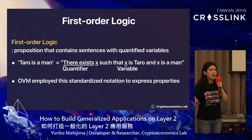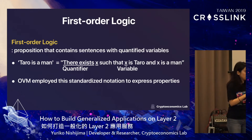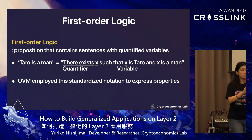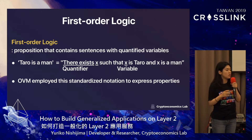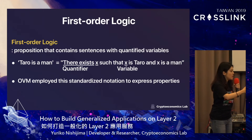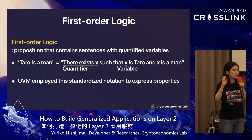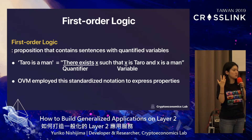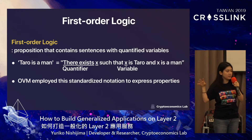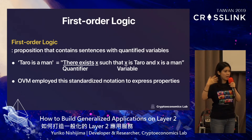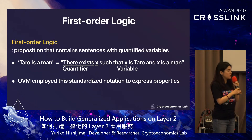The adjudication contract decides whether a claim is true or not. To claim some fact is correct to the adjudication contract, you use first-order logic — a proposition containing sentences with quantifiable variables. For example, if you want to claim that Taro is a man, you follow this format: 'there exists x such that x is Taro and x is a man,' where 'there exists' works as a quantifier and x is a variable. OVM, as the shared language for layer 2, employs this standardized notation to express these properties.